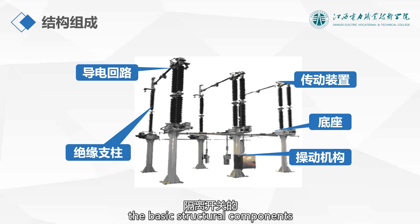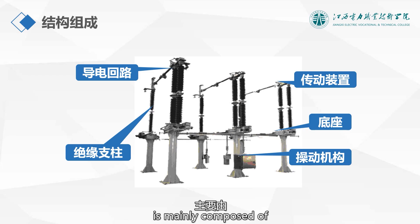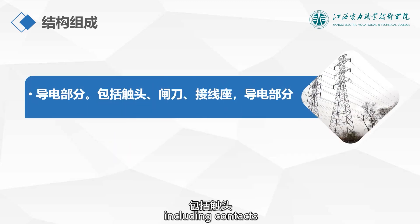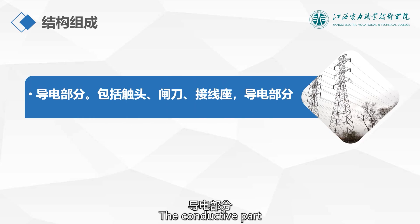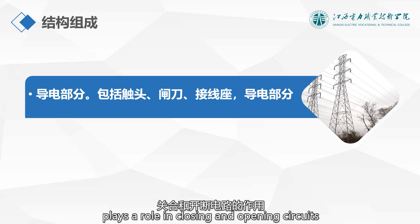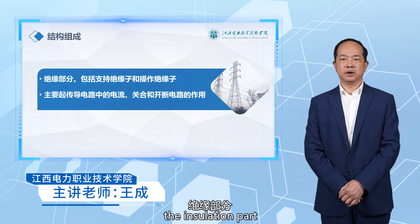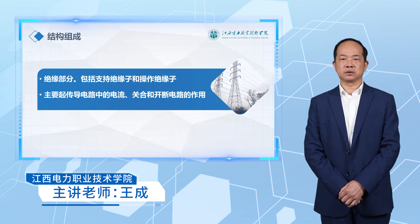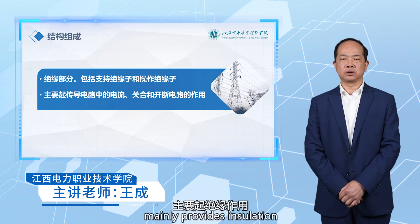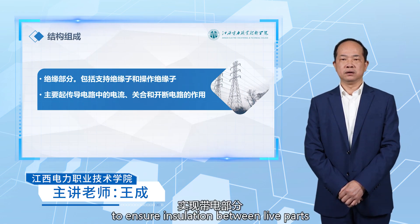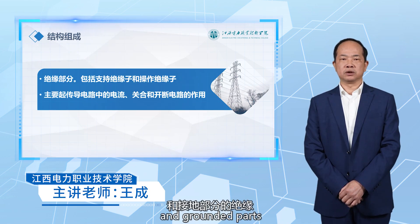Next, let's understand the basic structural components of disconnect switches. A disconnect switch is mainly composed of the following parts. First, the conductive part, including contacts, blades, and terminal bases. The conductive part mainly conducts current and plays a role in closing and opening circuits. Second, the insulation part includes support insulators and operating insulators, which mainly provide insulation to ensure insulation between live parts and grounded parts.